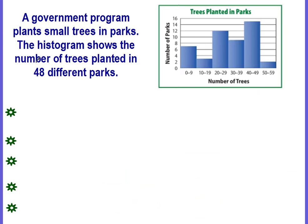Okay, so we have another one, another histogram. This one says that a government program plants small trees in parks. The histogram shows the number of trees planted in 48 different parks. Look at your intervals. From 0 to 9, 10 to 19, 20 to 29, etc.